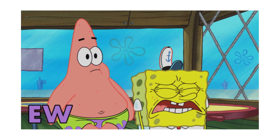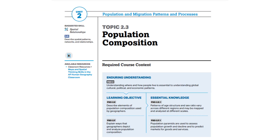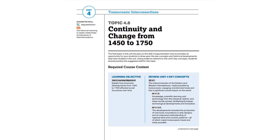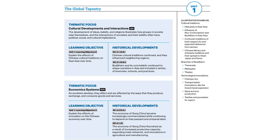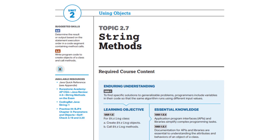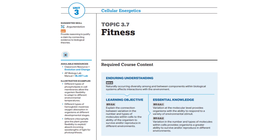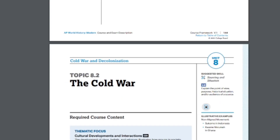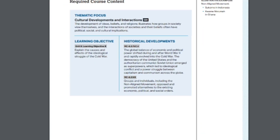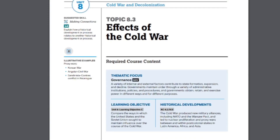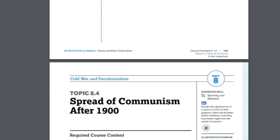Now we get into the nitty-gritty: the next chunk of the CED tells you what you should be learning in each unit and each lesson. It lists any required skills and learning objectives. For AP World, we're given illustrative examples such as Filial Piety in East Asia and Champa Rice for lesson 1.1. AP Biology provides a considerable number of essential knowledge points as well as illustrative examples. Each unit and lesson has a page or two like this, and they're incredibly important when studying for your test and the AP exam.